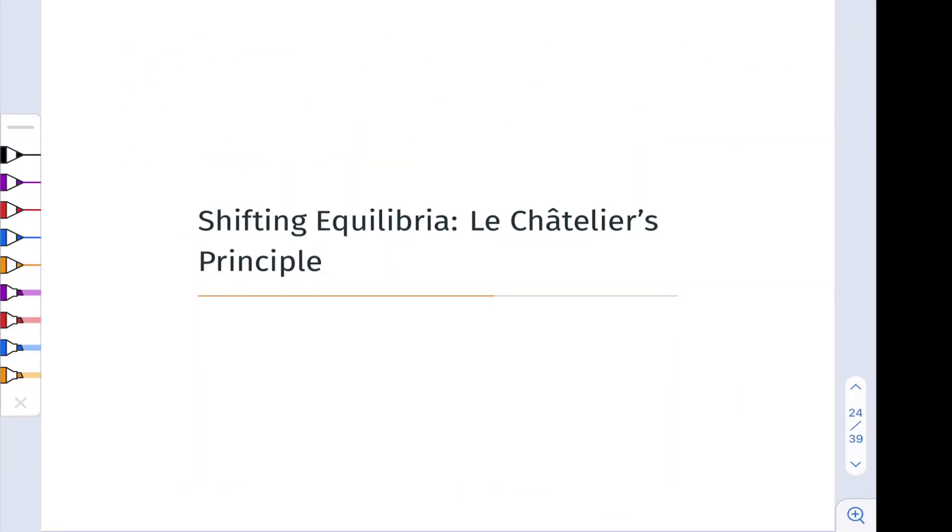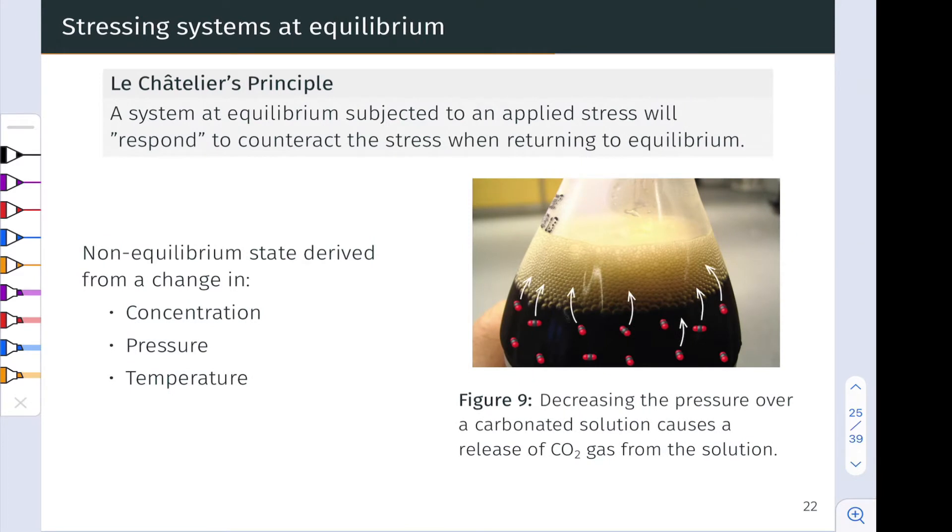Le Chatelier's principle is essentially a guiding light in thinking about how to get reversible reaction systems to do what we want them to. The basic form is shown at the top of this slide. Let's imagine we've got a system at chemical equilibrium, and the position of equilibrium—how much product we have relative to reactant—maybe is not where we want it to be.